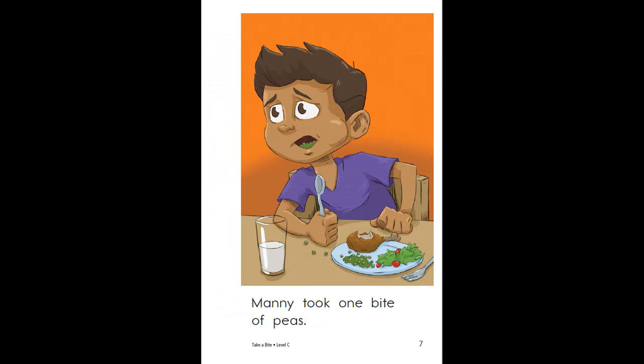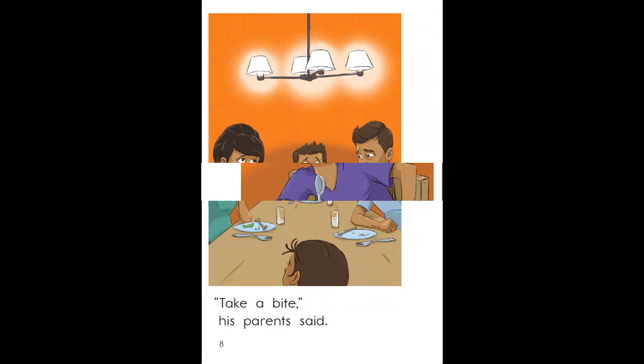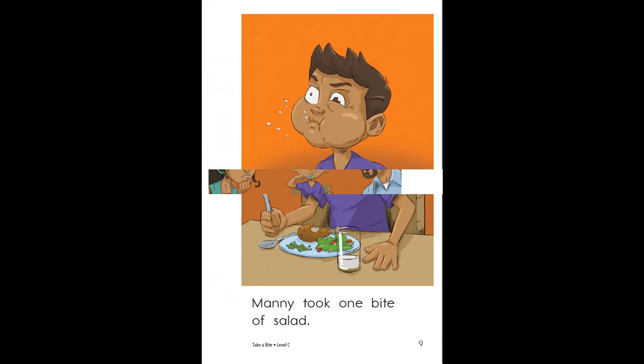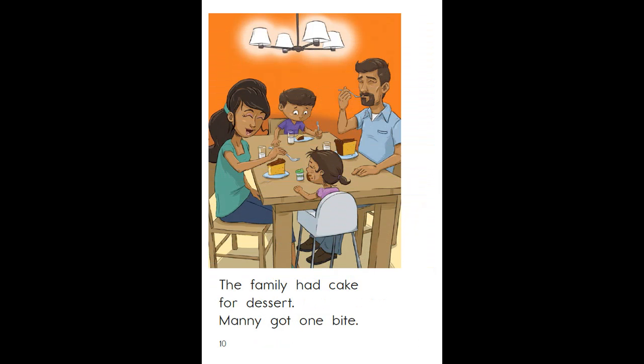Manny took one bite of peas. Take a bite, his parents said. Manny took one bite of salad. The family had cake for dessert. Manny got one bite.